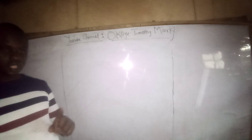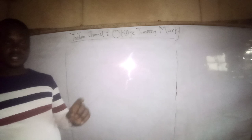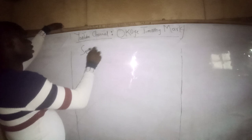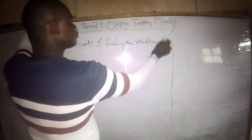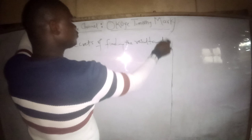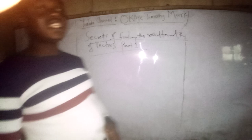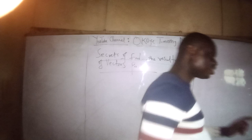So today I want to show us the sequence of dealing with vectors resultant — Method 1. I call it: Secrets of finding the resultant of vectors, Part 1. When vectors are in the same direction, just add them to get the resultant. That is Step 1, Method 1: add the vectors that are in the same direction to get the resultant.